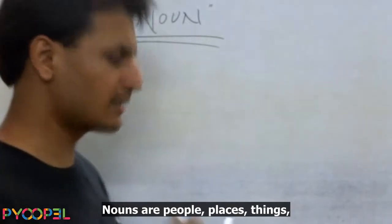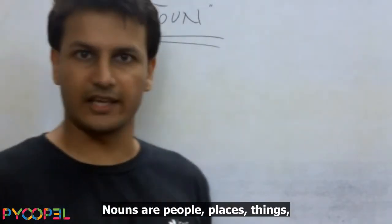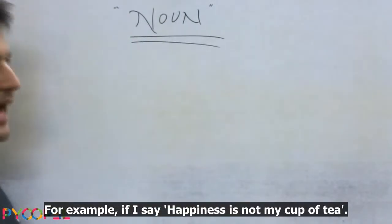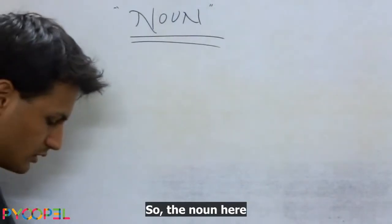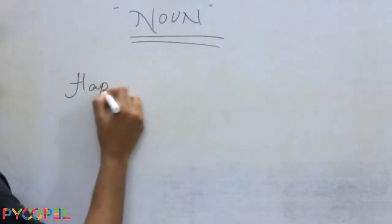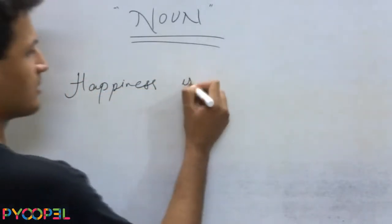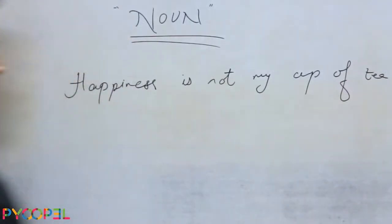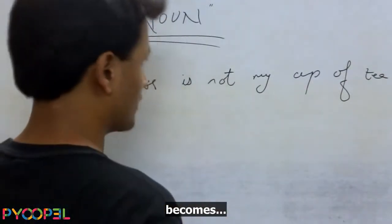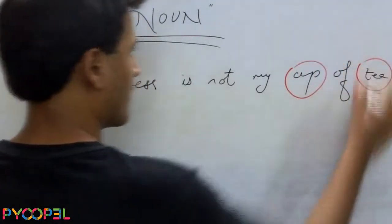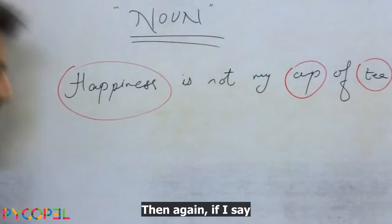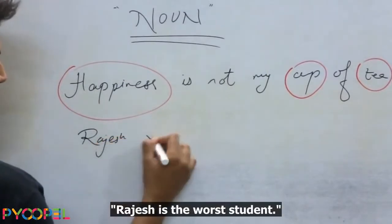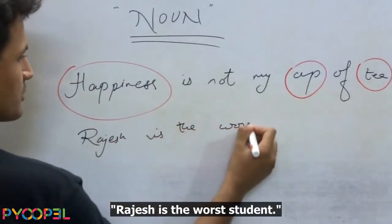Let's start with nouns. Nouns are people, places, things — entities that we reference in any sentence. For example, if I say 'happiness is not my cup of tea,' the noun here is happiness. And again, if I say 'Rajesh is the worst student,' Rajesh is also a noun.